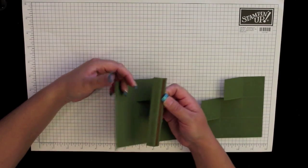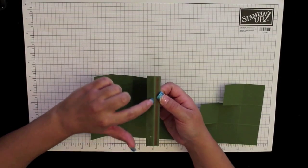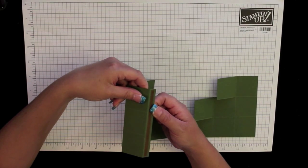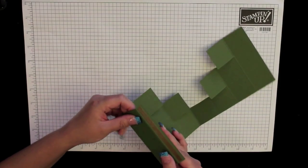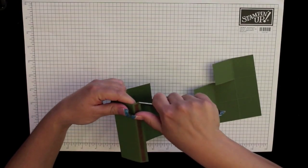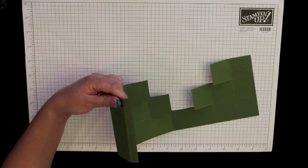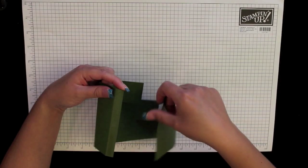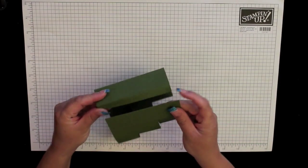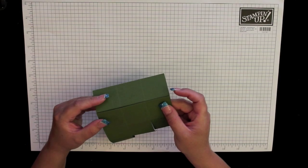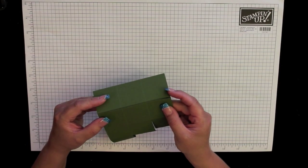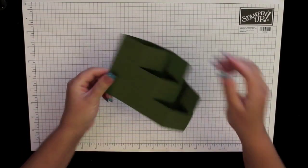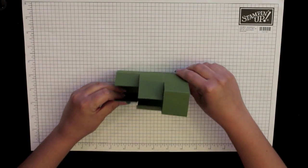So bring this end up and you're going to have the end of this line up with the edge of the score line. Adhere that in place, peel the sticky strip off the other side, wrap the other end around and again line up this edge right here with that score line that we made before. Okay, go ahead and pinch that into place and now it's starting to take shape.